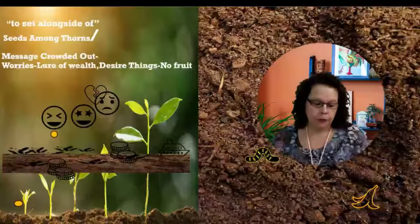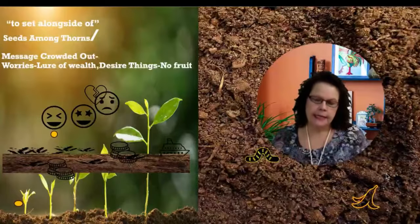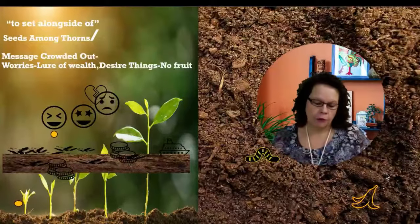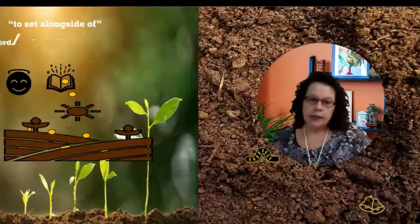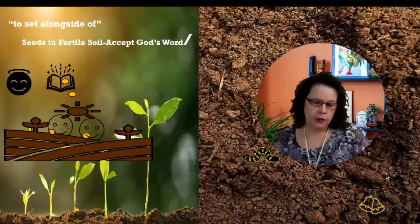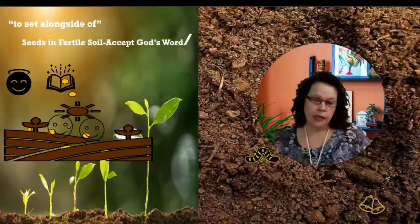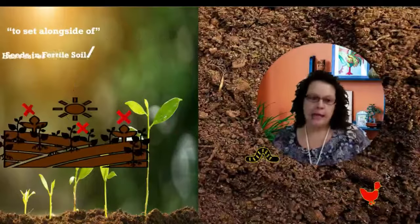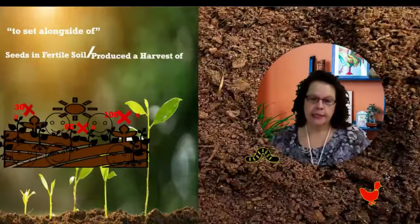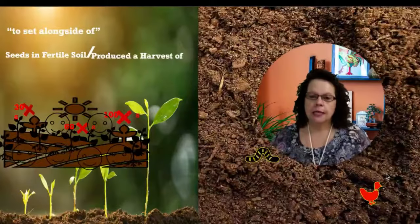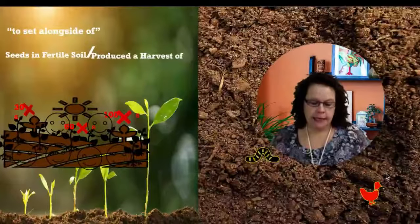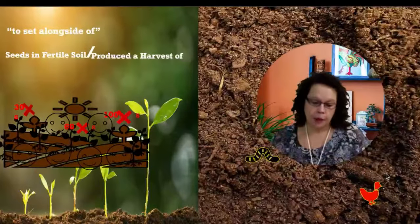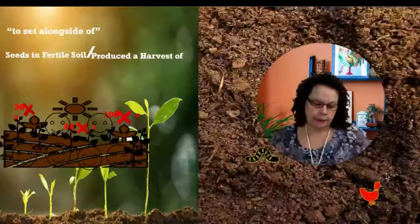The seeds that fell on the good soil represent those who hear and accept God's word and produce a harvest of 30, 60, or even a hundred times as much as been planted. This seed has fallen on fertile soil, no doubt. It was the right spot, for the fruit was seen. We are to listen and to obey. That's what brings the fruit.